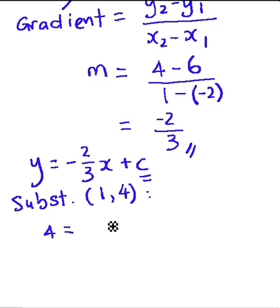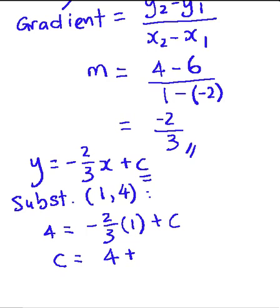4 = -2/3(1) + c. And if we put c as the subject, we will get c = 4 + 2/3, because when we bring over -2/3 it becomes +2/3.